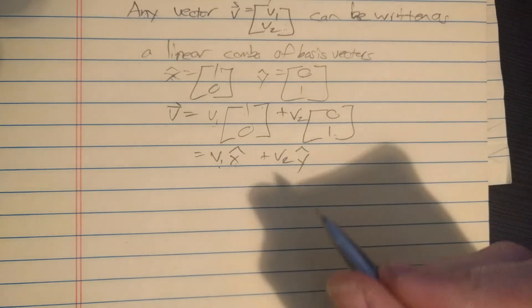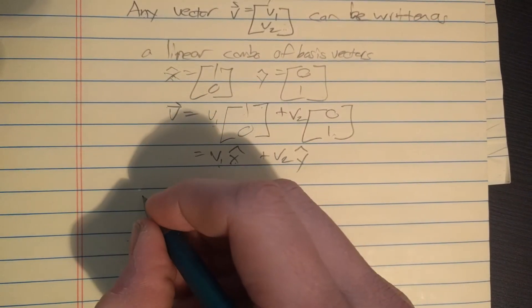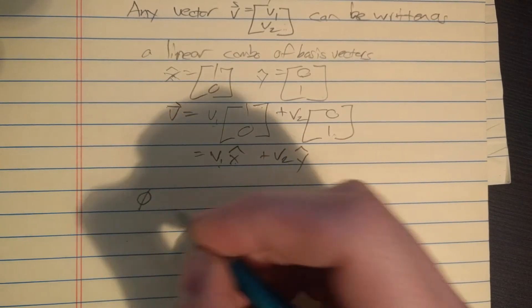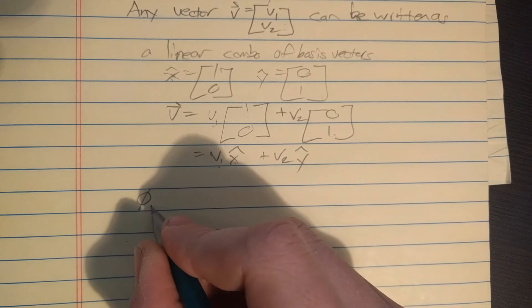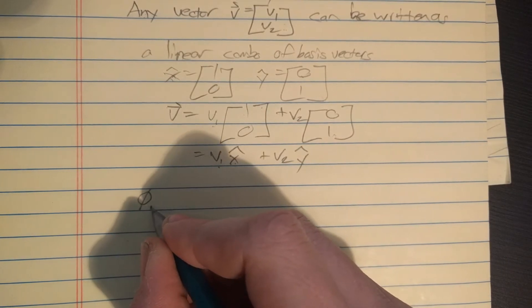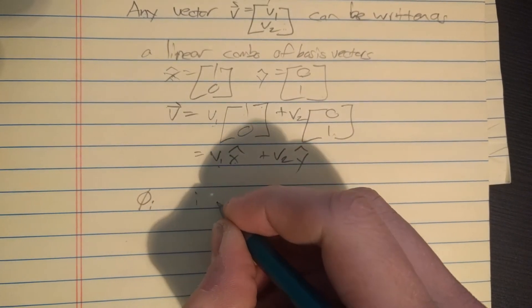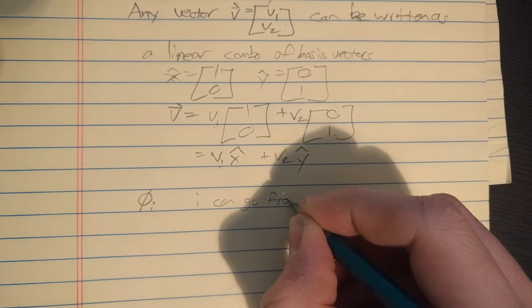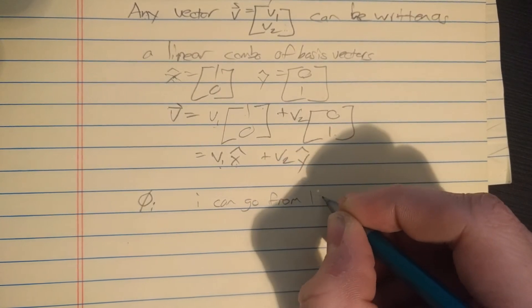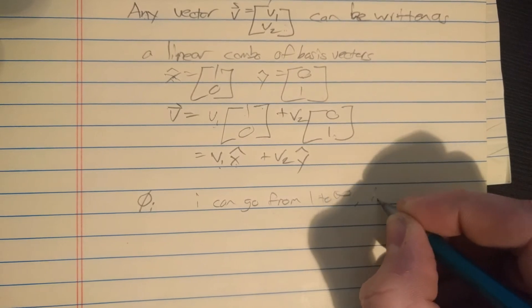Usually in quantum mechanics our basis states are denoted by phi. In most of the books I read they're denoted by phi and you can have an infinite number of basis states, so you got to label them with an index i. And i can go from one to infinity but it has to be an integer.